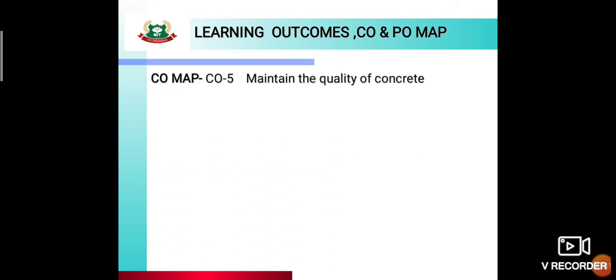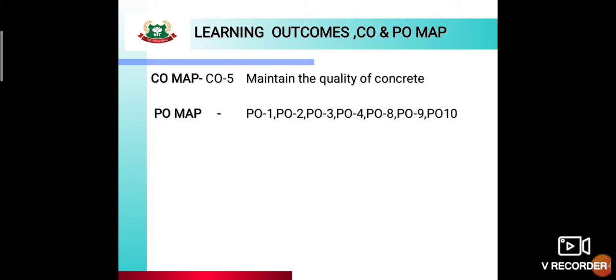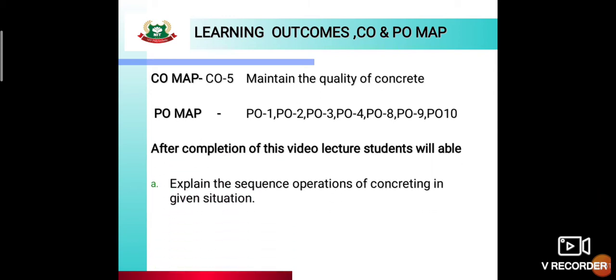First we will see learning outcomes, course outcomes and program outcomes. The first course outcome is to maintain the quality of concrete. The PO map includes PO1, PO2, PO3, PO4, PO8, PO9 and PO10 mapped from this unit. The learning outcome of this video lecture is to explain the sequence of operations of concreting in a given situation.